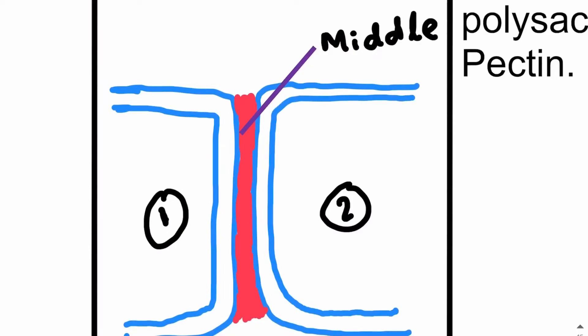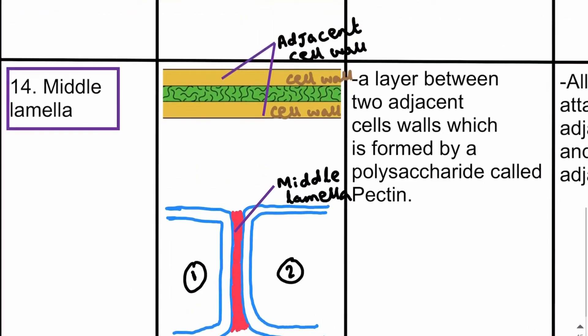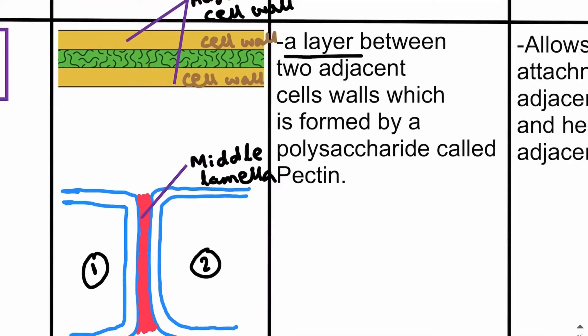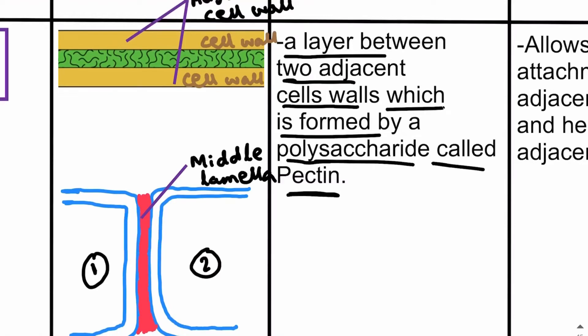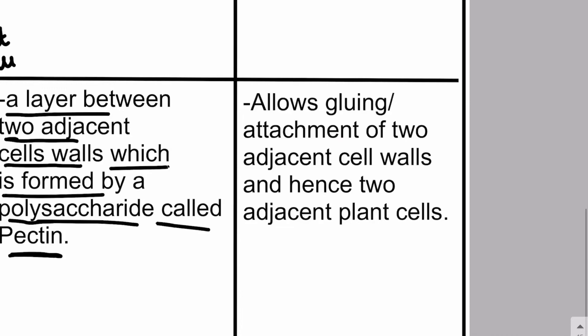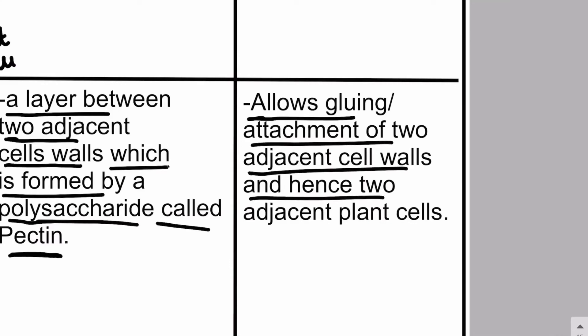The middle lamella is made up of a gluing substance called pectin. The middle lamella is a layer between two adjacent cell walls of two plant cells, formed by a polysaccharide called pectin. Pectin is a gluing substance, so it glues or attaches the neighboring cell walls together. The function of the middle lamella is to allow the gluing or attachment of the two adjacent cell walls of neighboring plant cells.